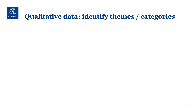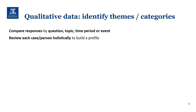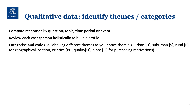When you're dealing with qualitative data — words, observations, pictures or symbols — try to identify themes or categories. Try comparing responses by question, topic, time period or event. For example, if you have 10 interviewees, you might compare all 10 answers to question 1. Alternatively, review each case or person holistically to build a profile — for example, analyze respondent 1's interview in full, then move on to respondent 2. You can also use categorizing and coding, where you label different themes as you notice them. For example, you could use U for urban, S for suburban and R for rural when dealing with geographical locations.